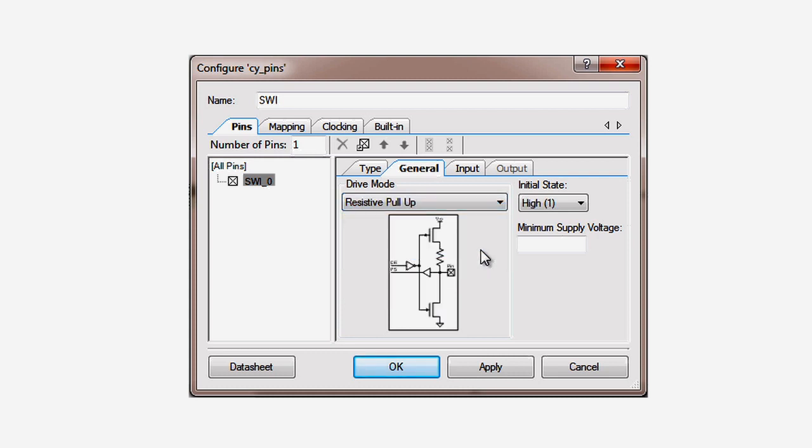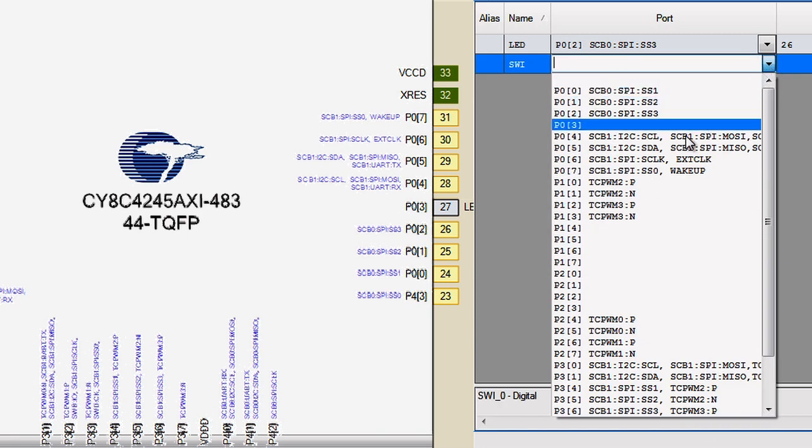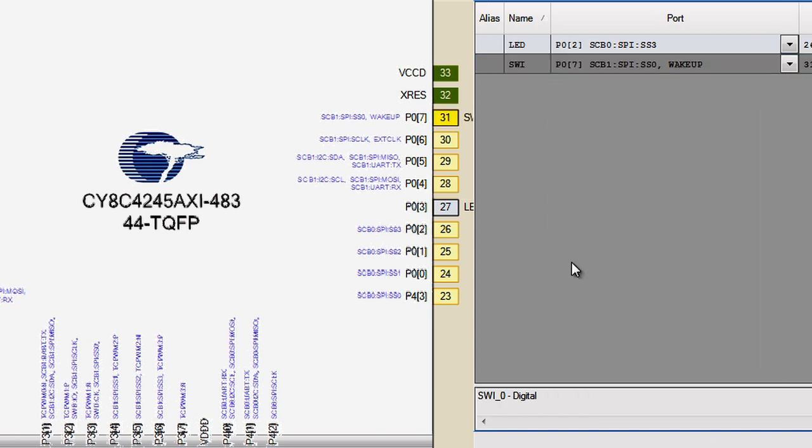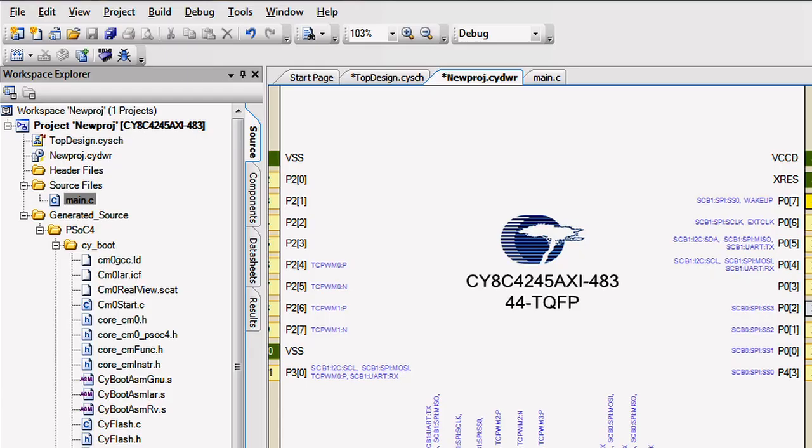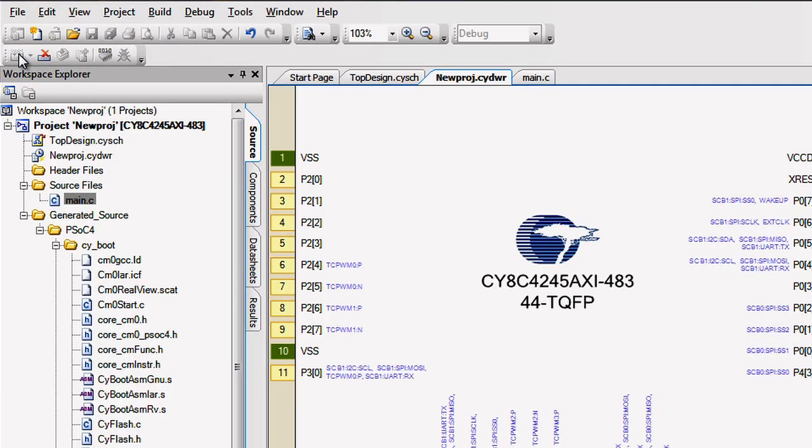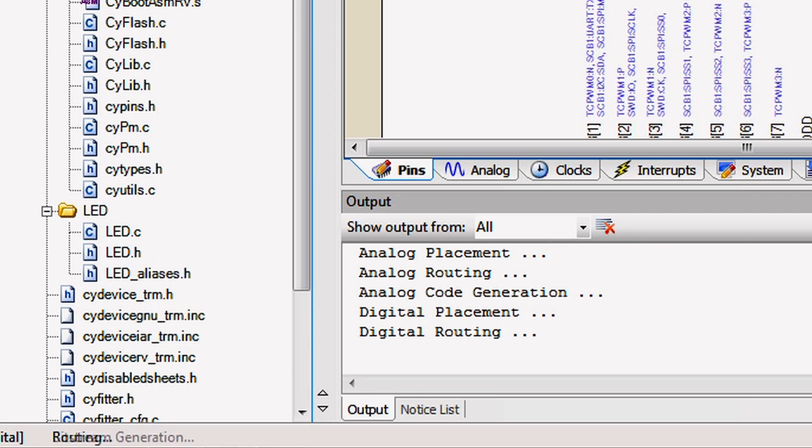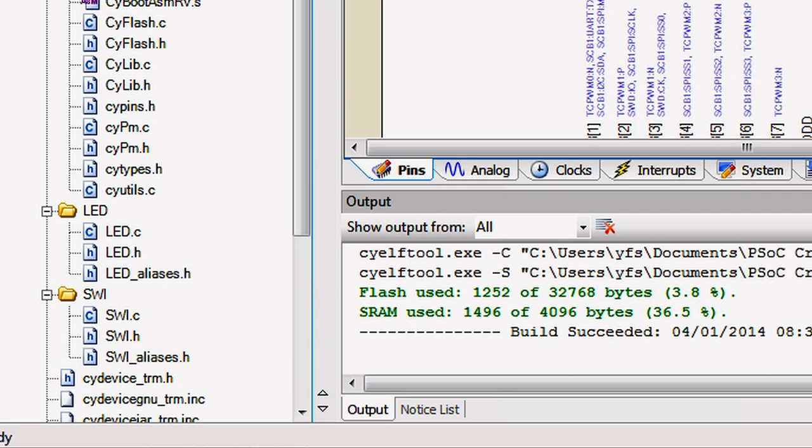That way, when we press the switch, the pin will read a zero, and when not pressed, the pull-up resistor will make sure that the pin reads a one. We use the resources file to choose the right pin on the board. In this case, it's P07.